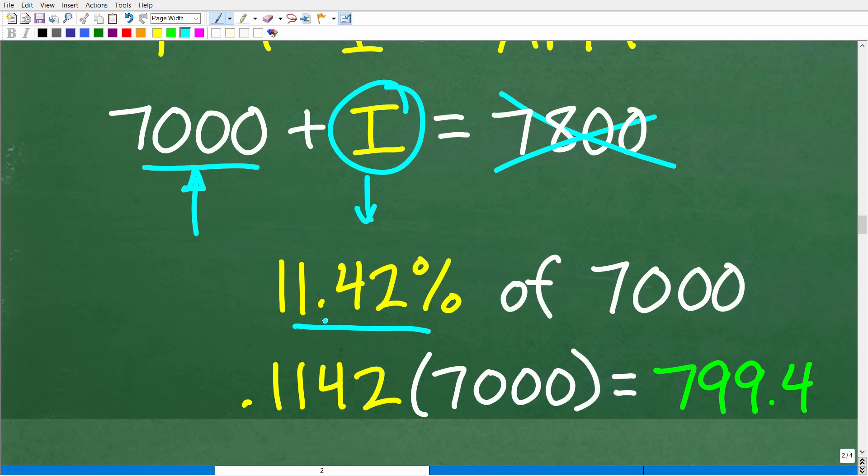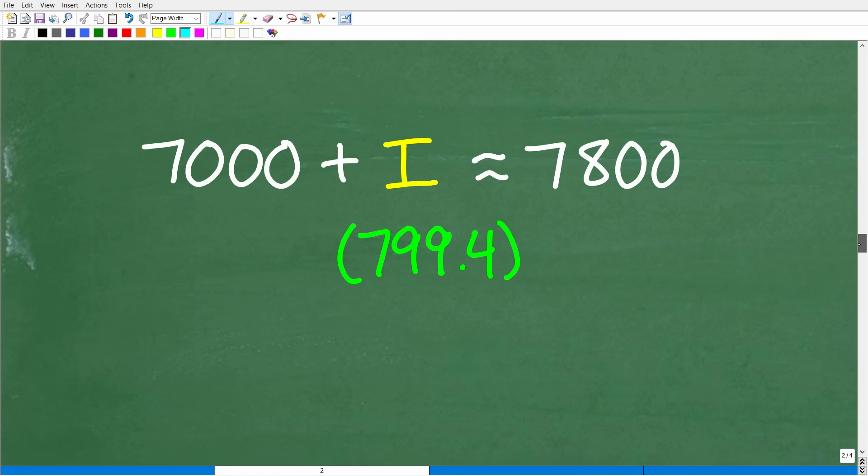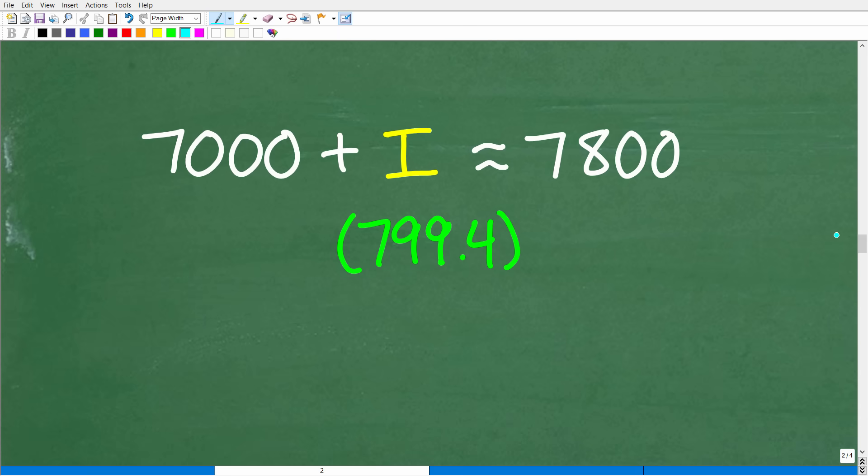So we're putting in 7,000. So we need to figure out, okay, 11.42% of 7,000 is what? Well, we're just going to take this percent and write it as a decimal. So that's going to be 0.1142. We'll multiply that by 7,000. And look at that. It's going to be 799.4, pretty close to $800 because we did do a little bit of rounding off. But if we have our 7,000 and we add 799.4, we're pretty much at $7,800.